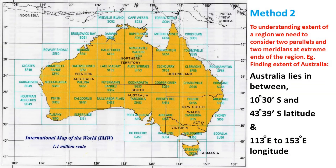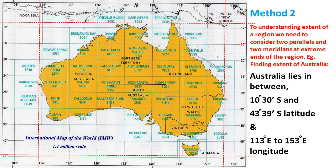This is Method 2: finding the extent of a region. Australia lies between 10 degrees 30 minutes south and 43 degrees 39 minutes south latitude, and 113 degrees east to 153 degrees east longitude. A box is drawn around Australia and then the longitudes and latitudes are measured to find the extent of the region.